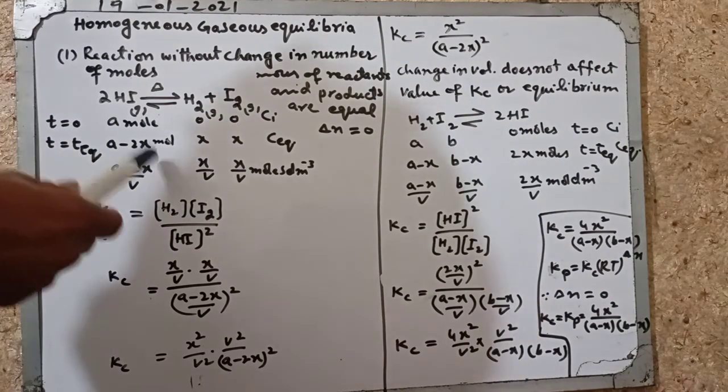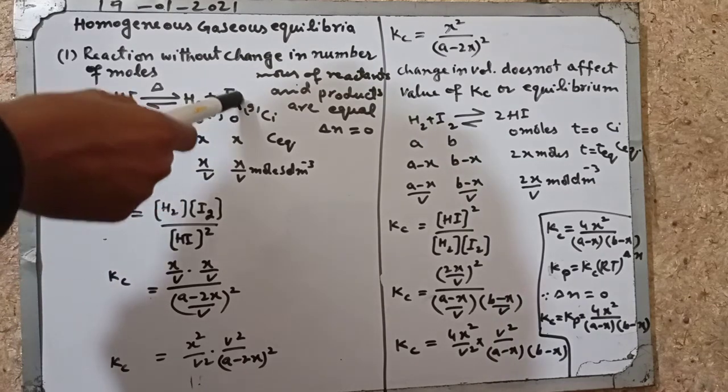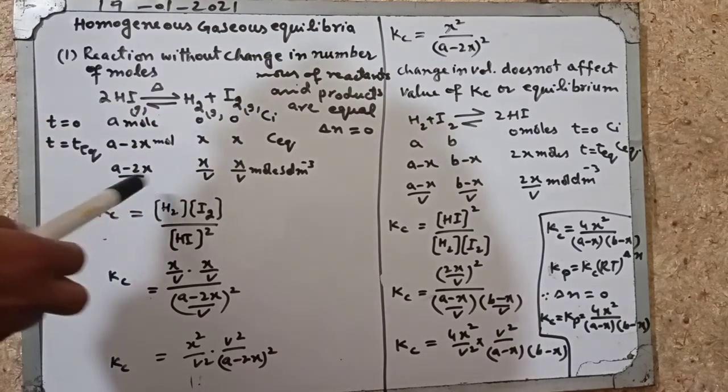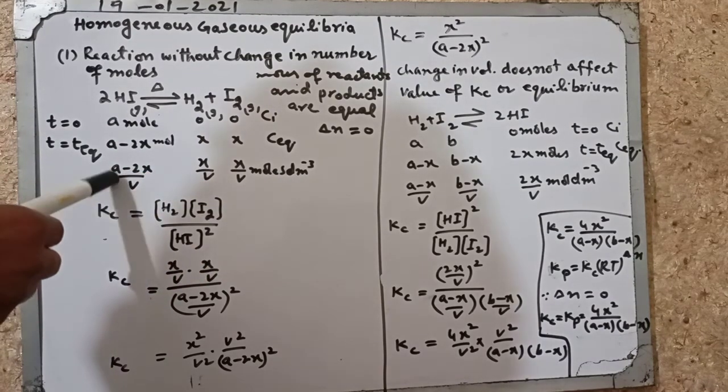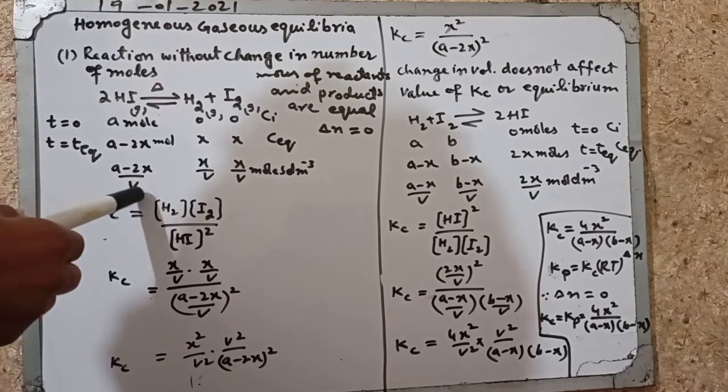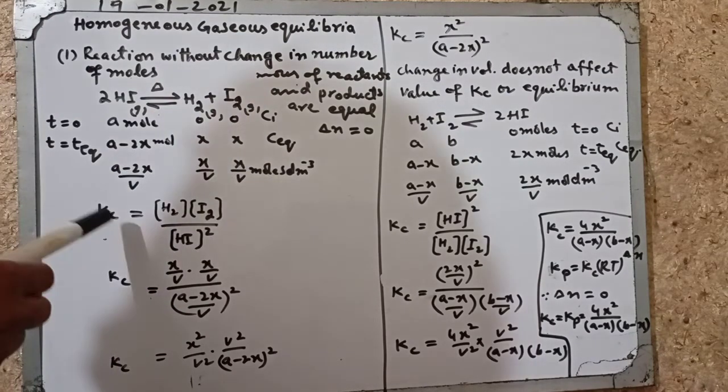It is 2x. a minus 2x moles are left, x moles of H2 are formed and x moles of I2 are formed. Concentration is written in moles per cubic decimeter. Divide by the total volume: a minus 2x over v, x over v, and x over v moles per cubic decimeter.